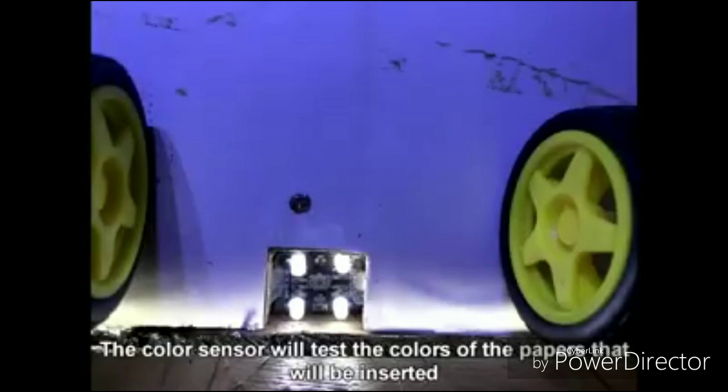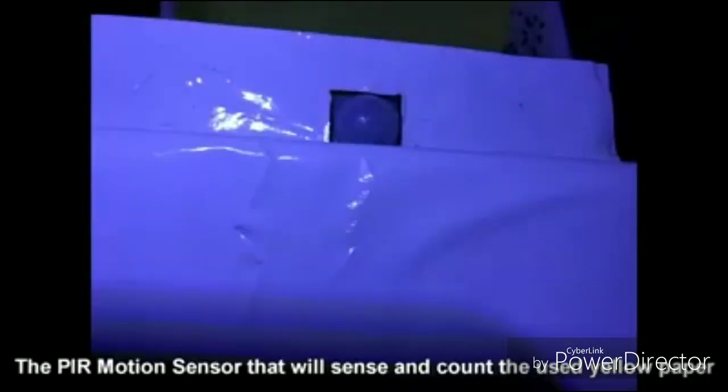The color sensor will test the colors of the papers that would be inserted. The PIR motion sensor will sense and count the used yellow paper.